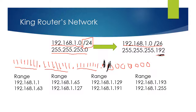So our four networks break down as follows: 192.168.1.1 to 192.168.1.63; 192.168.1.65 to 192.168.1.127; 192.168.1.129 to 192.168.1.191; and 192.168.1.193 to 192.168.1.255.